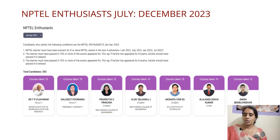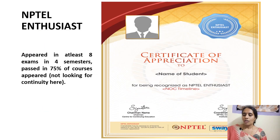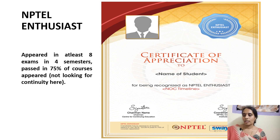Coming to NPTEL Enthusiast: the student has to appear for at least 8 exams in 4 semesters and pass with 75%. But the criteria here is that there is no need for continuity — the student can take a break between semesters and continue the course, then will get the NPTEL Enthusiast certificate. The certificate looks the same, with only the NPTEL Enthusiast badge being different. The certificate shows your photo, name, domain, timeline, and domain name.